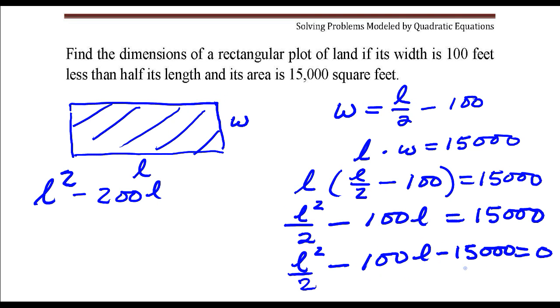And this last term by 2 would be minus 30,000. And then the right hand side, if you multiply 0 by 2, you still get 0. And this makes it a lot easier when you're factoring.